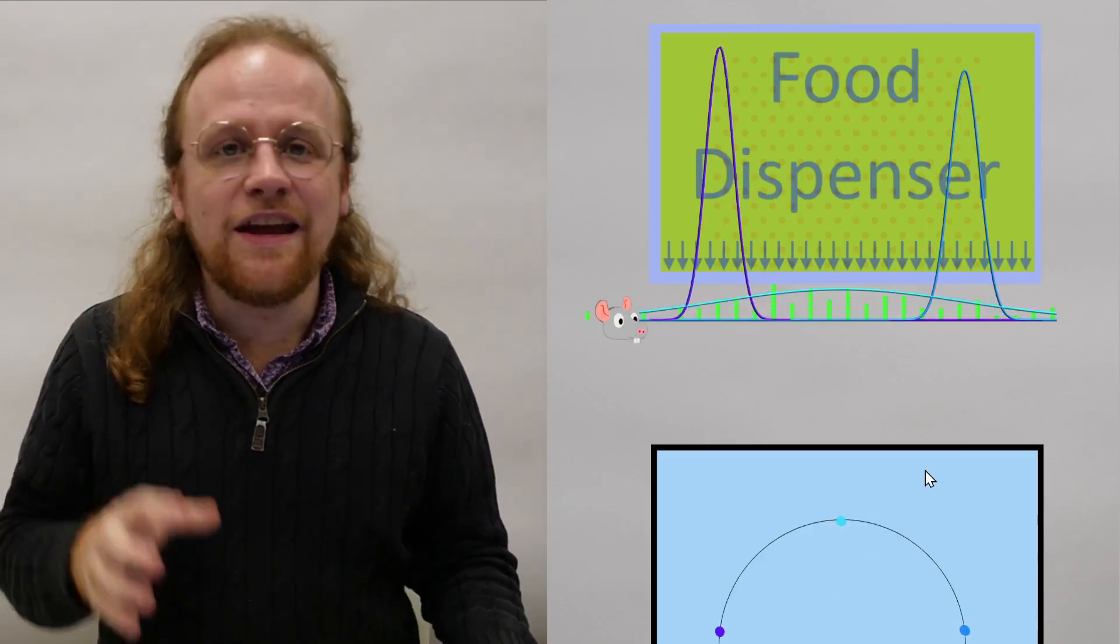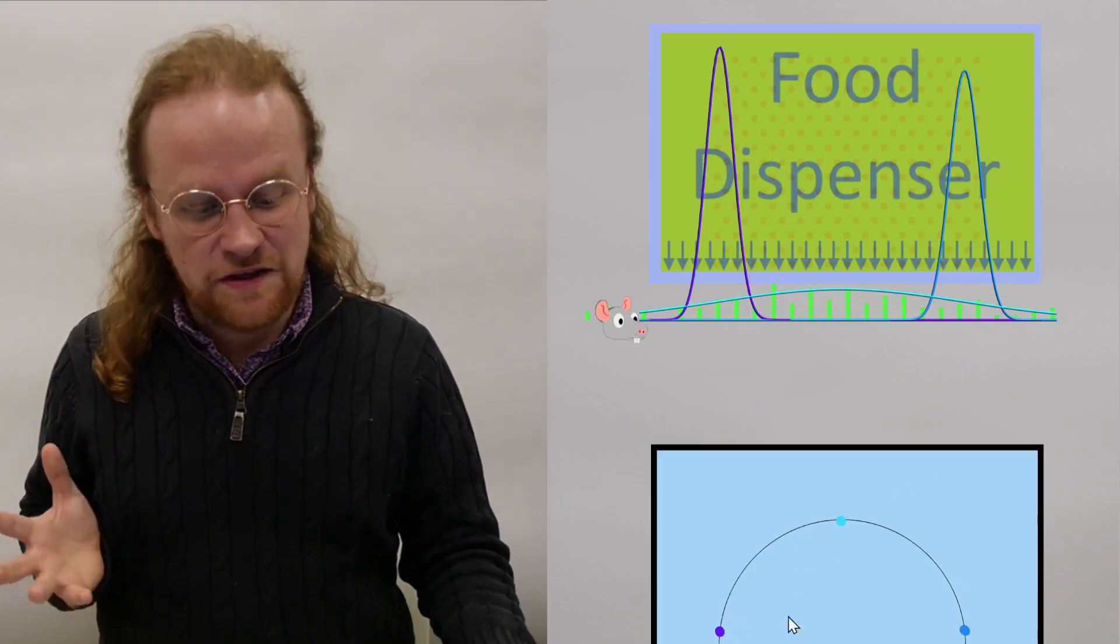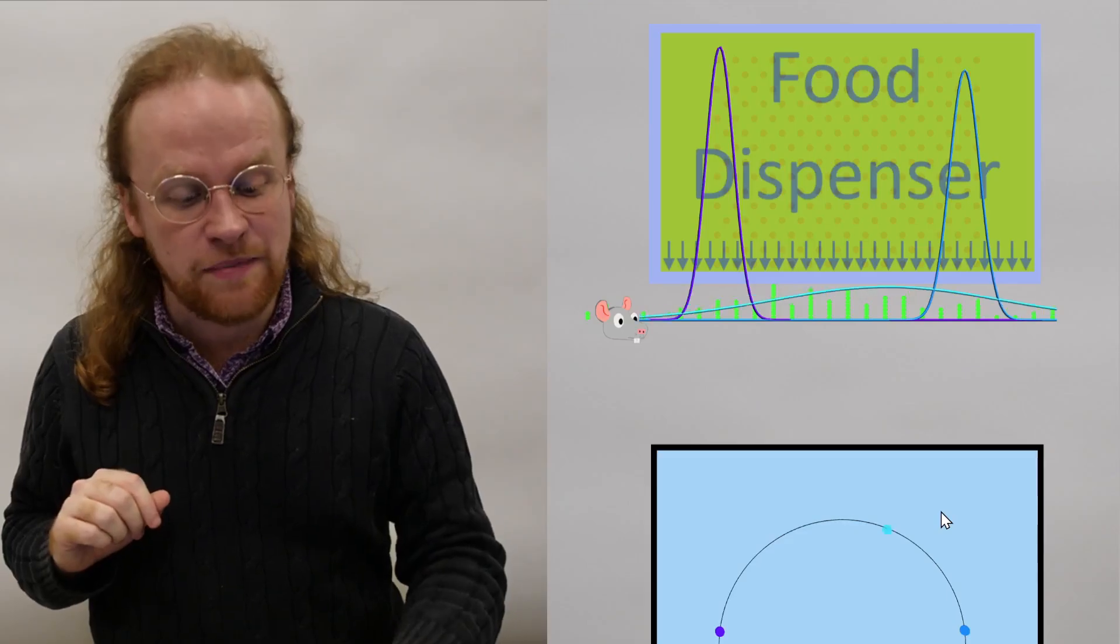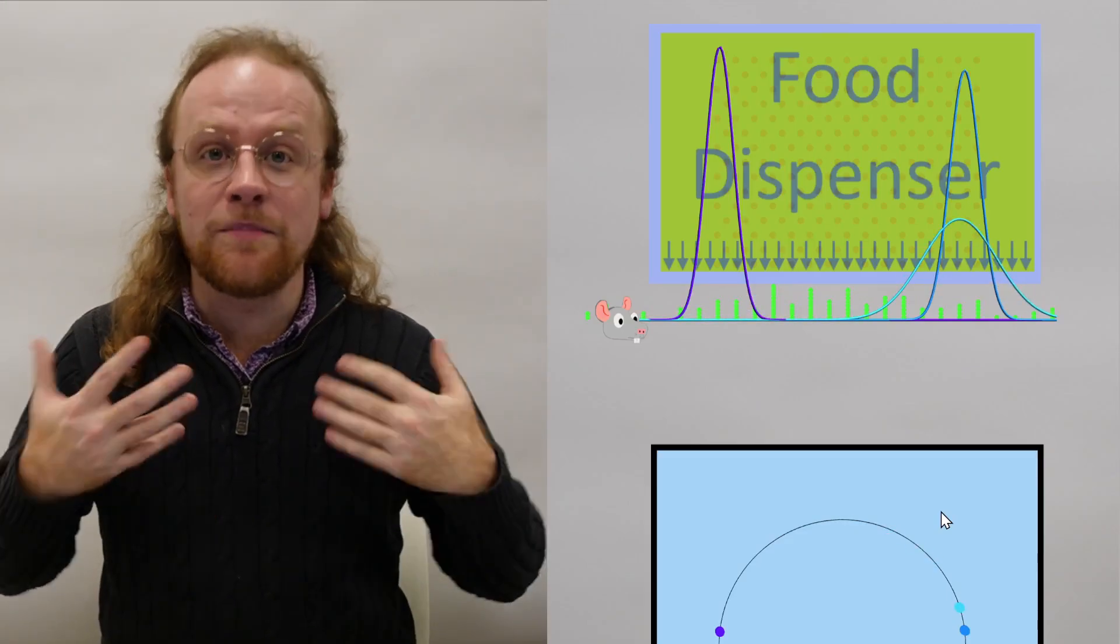It turns out that the shortest path between this point and this one is a circular arc. And that is the path that the rat's beliefs take, because the rat is evolved to update its beliefs in an efficient way.